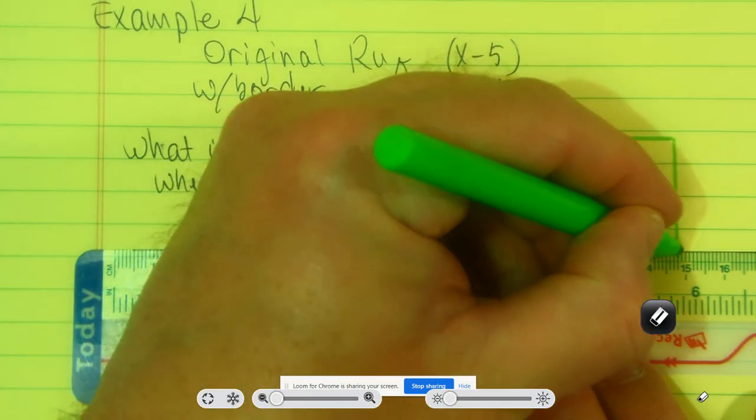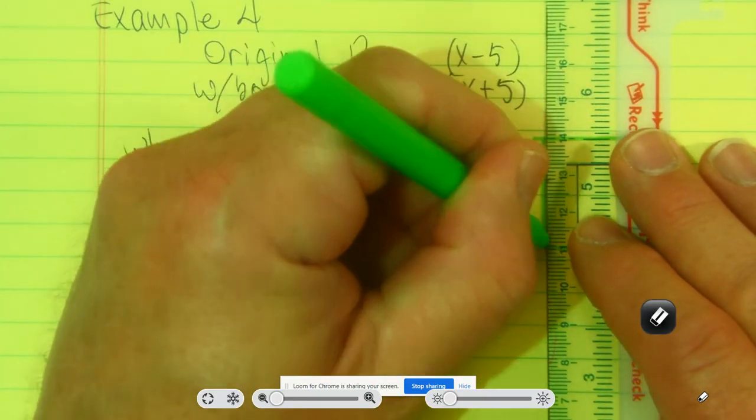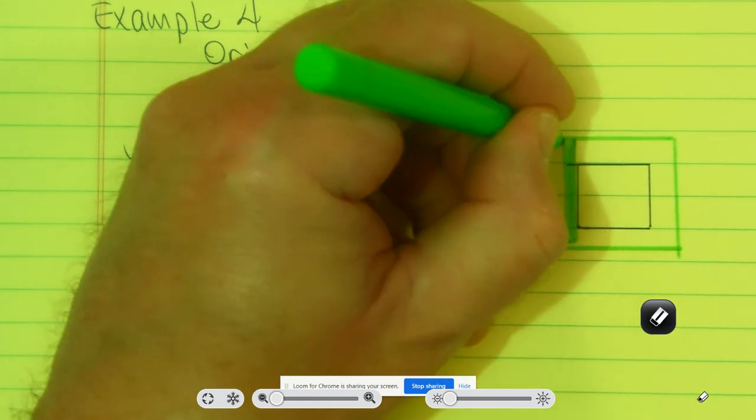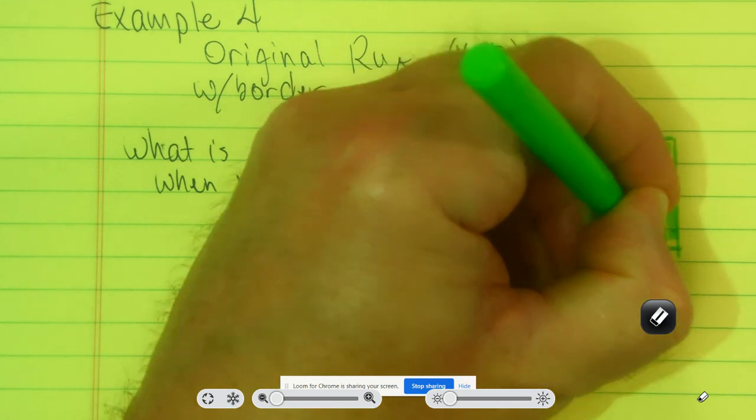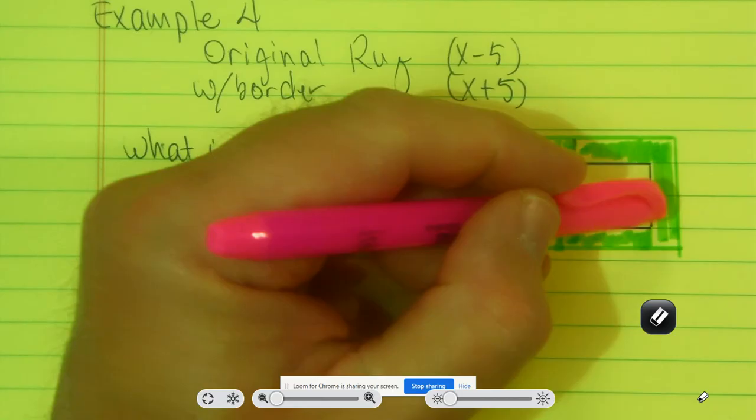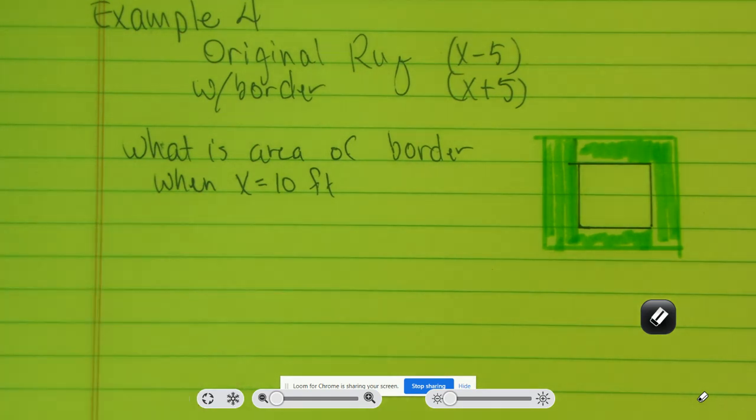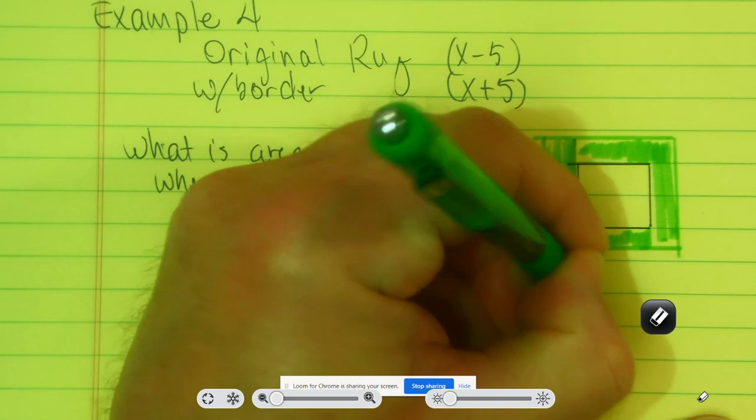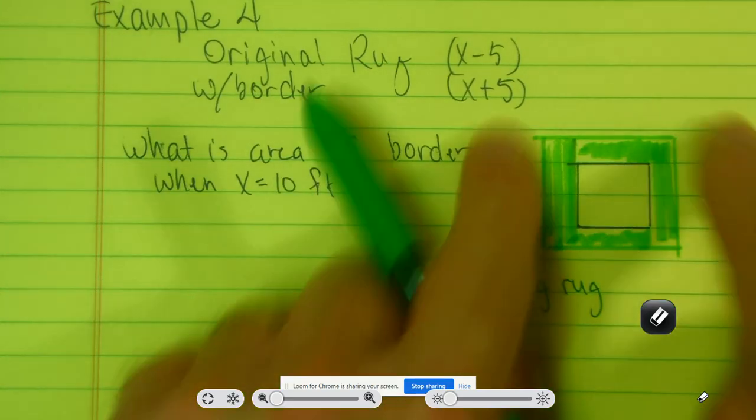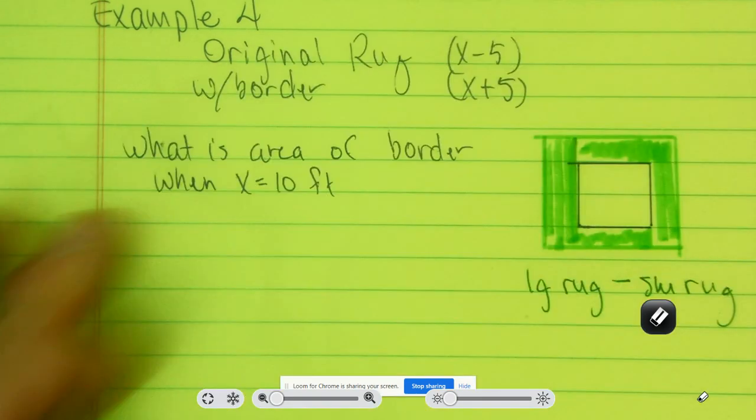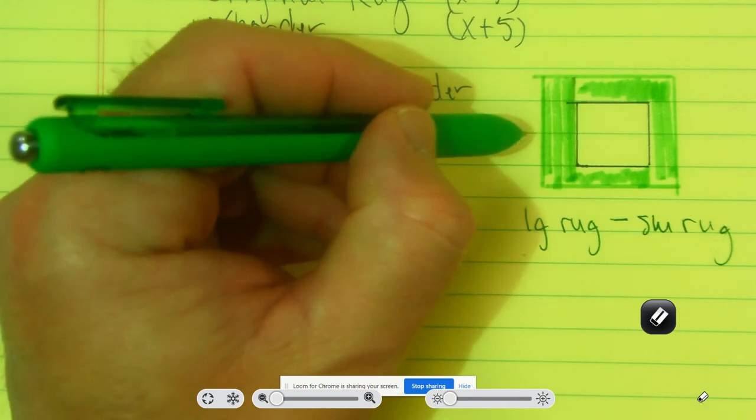That's not the best drawing in the world, but I guess it'll work. Now what I'm asked to find is the area of this border region here. So what I need to understand is how do I find the area of that and not include this area in the middle? Well, the way that I would do that is I would need to take the area of the large rug and subtract from it - if I take the whole thing and just go minus the whole, minus the small rug - then I'll have the area of just the border. I think that makes sense.